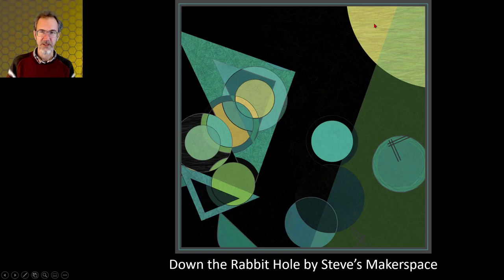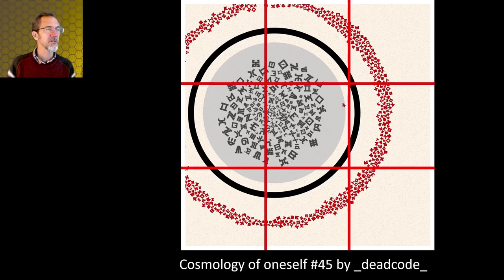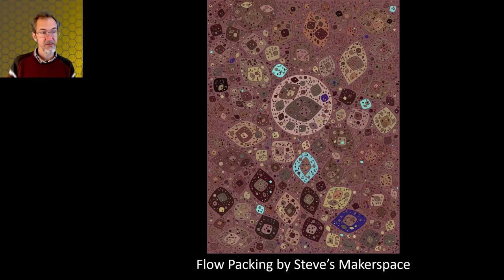Here's cosmology of oneself by dead code. And what I would point out here is that it's almost in the thirds. It's not quite on a thirds point but it is kind of in a thirds line right here. The center is right here. It is following that rule. Here's a piece of mine that doesn't follow the thirds. I've got an object directly in the center. So this is more of a spiritual piece.